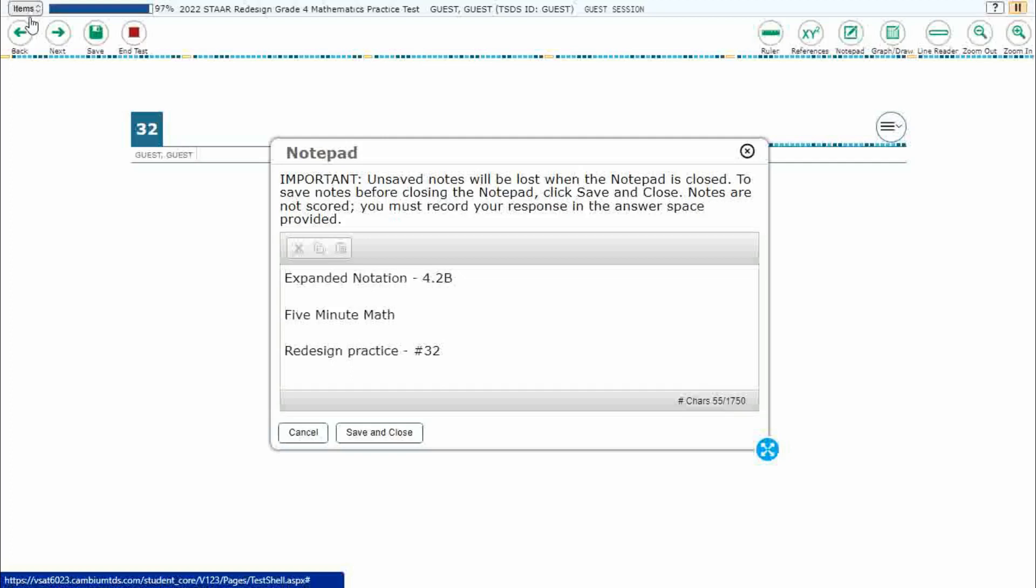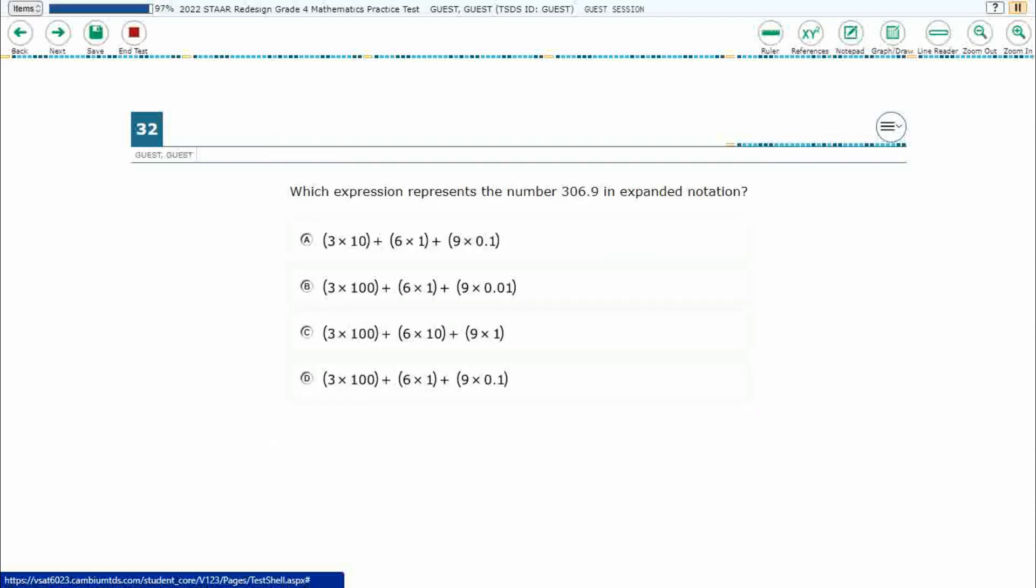Hello and welcome to 5-Minute Math. Today we are looking at the fourth grade concept of expanded notation. This is standard 4.2b in the great state of Texas and we are using item number 32 of the redesign practice online star test.